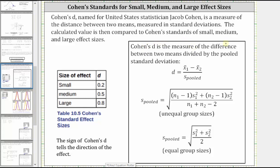Cohen's d is the measure of the difference between two means divided by the pooled standard deviation. So we have d equals the difference of x bar sub one and x bar sub two divided by the pooled standard deviation. We have two formulas for the pooled standard deviation, one for unequal group sizes and one for equal group sizes.